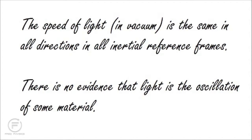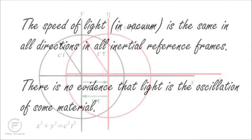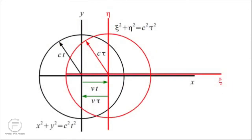The negative result of the Michelson-Morley experiment instead suggests that the speed of light is the same in all directions and in all inertial reference frames. And there is no evidence that light is the oscillation of some medium that would define a unique reference frame at absolute rest. This experimental fact just put our common sense logic and reason in the trash.